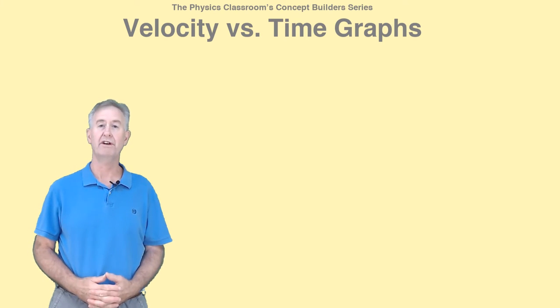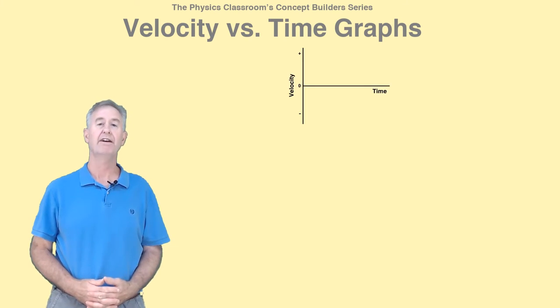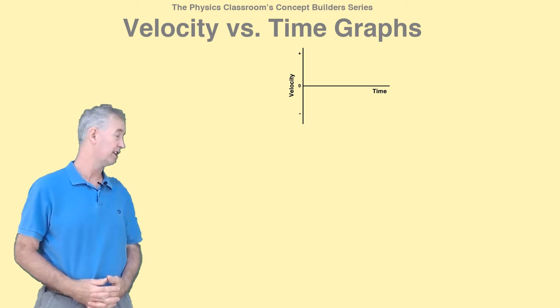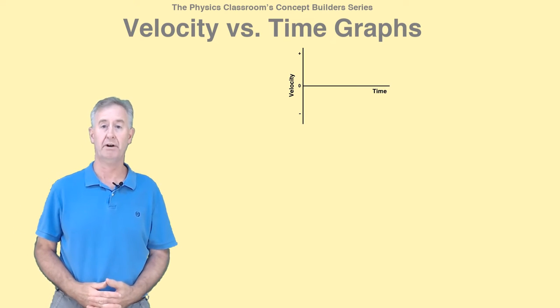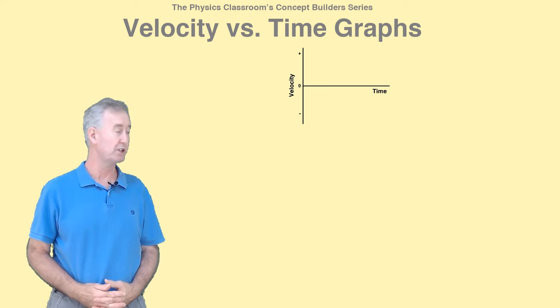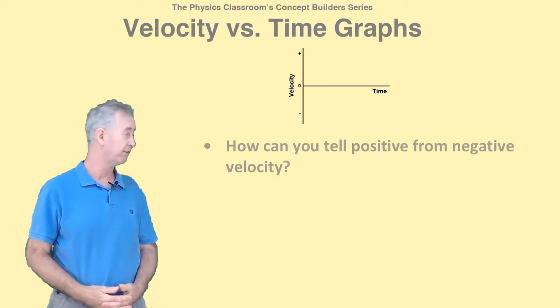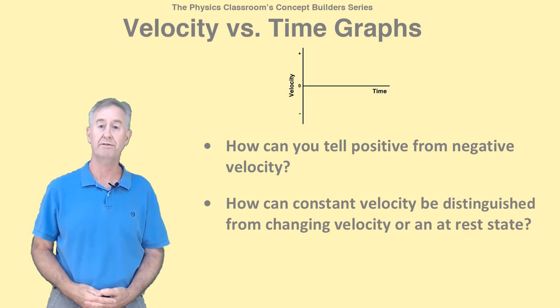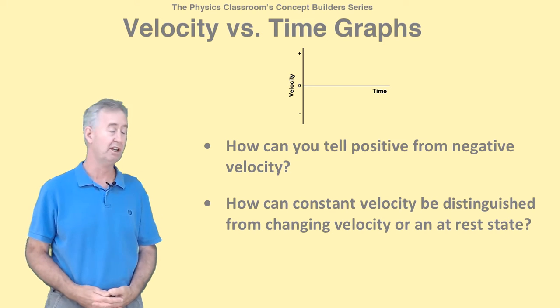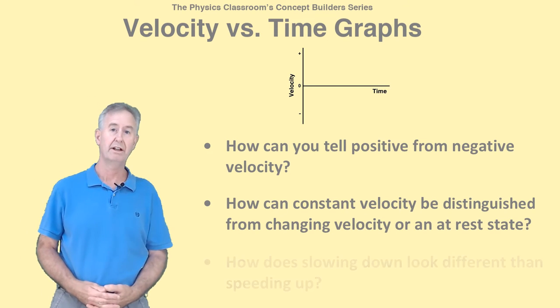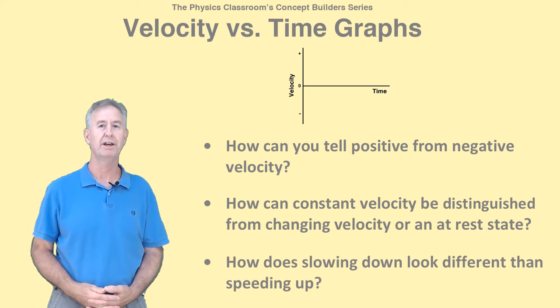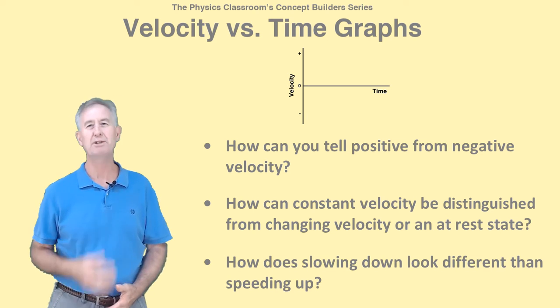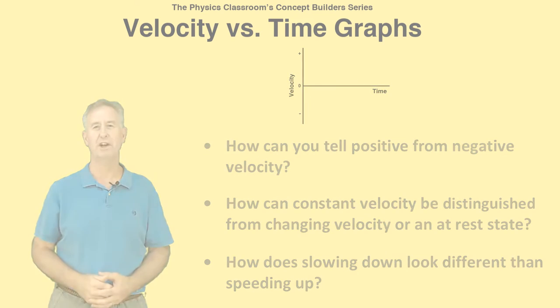It's common to represent the motion of an object by a graph. A velocity-time graph, or VT graph, is a common type of graph. But how do you interpret such a graph? How can you tell the difference between positive and negative velocity? Or between a constant velocity, a changing velocity, and an at-rest object? And how can you tell the difference between speeding up and slowing down? Well, I'm Mr. H, and I have some answers for you.